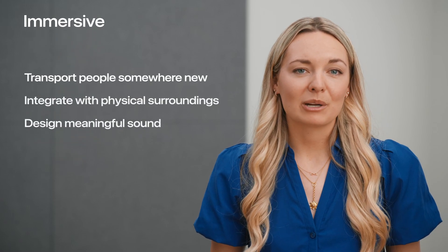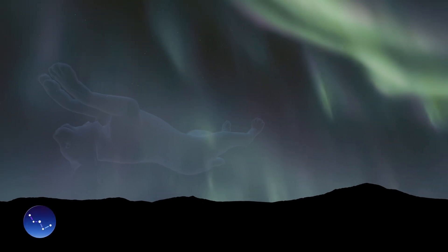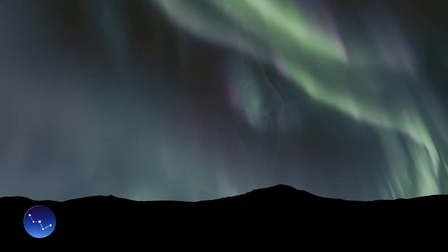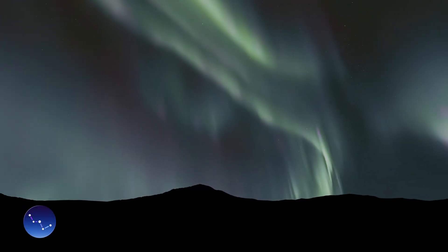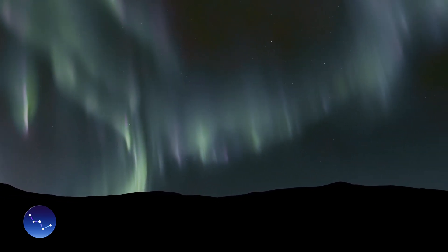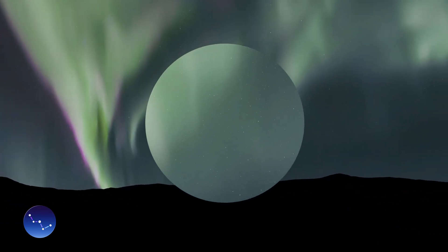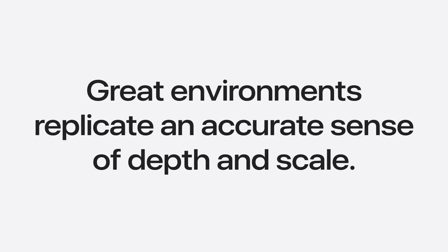Immersive apps can take people somewhere new, and you can do this with full immersion. Sky Guide by Fifth Star Labs excels at this. They transport you to your very own planetarium where constellations come to life as you gaze across the night sky. You can choose any location in the world to stargaze and even see the Aurora Borealis. You can plot constellations out of the sky to learn more, or use your hands as binoculars to get a closer look. Great environments replicate an accurate sense of depth and scale to bring you into a space that's a convincing representation of something recognizable, relevant, and real.